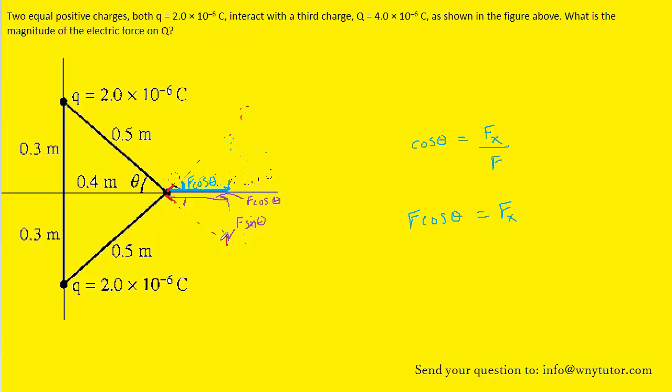So the only thing left to contend with is F times the cosine of theta. That's going to give us the overall force. So the net force acting on charge uppercase Q is going to equal F cos theta plus another F cos theta, or 2F cos theta.